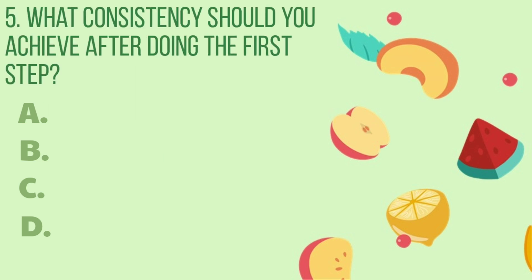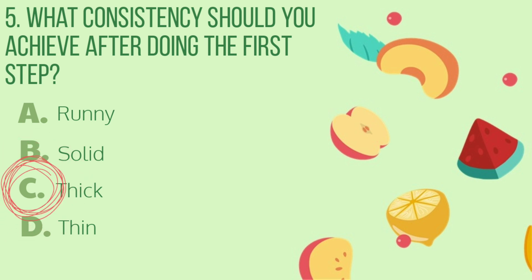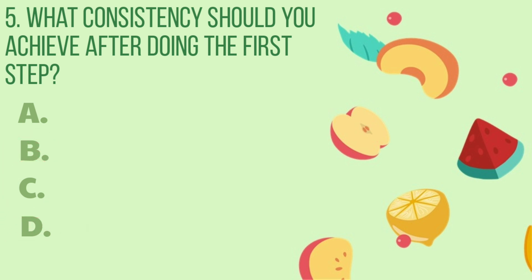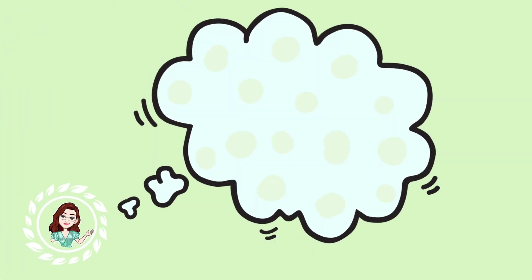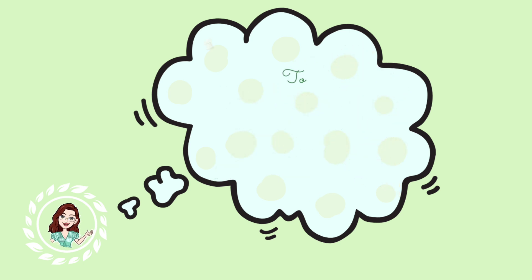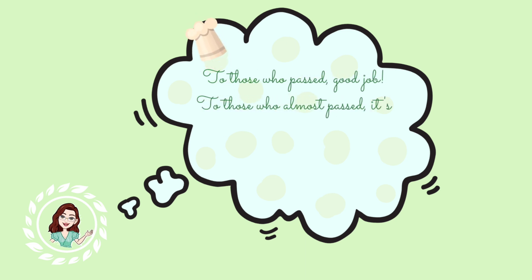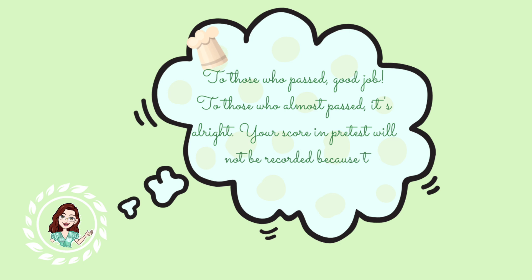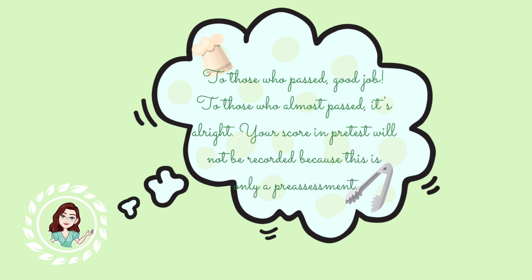Number 5. What consistency should you achieve after doing the first step? Letter A: Runny. B: Solid. C: Thick. D: Thin. The correct answer is letter C. Who got the perfect score? Great job! To those who passed, good job. To those who almost passed, it's alright.